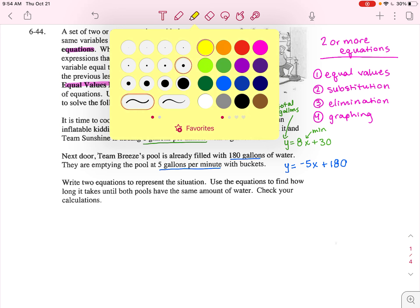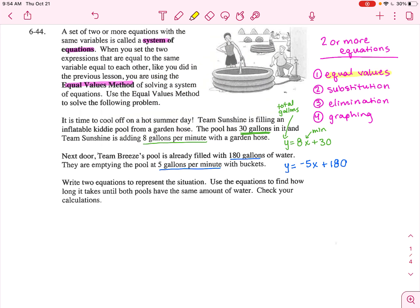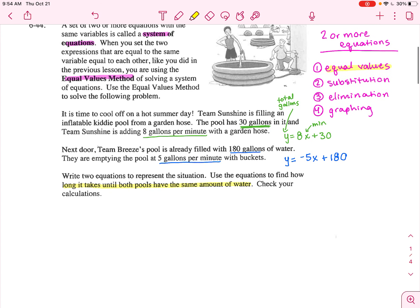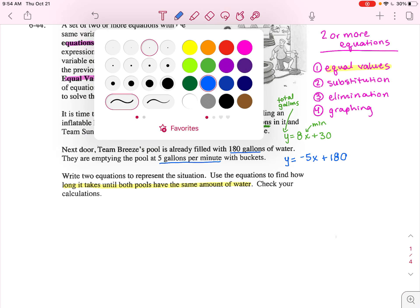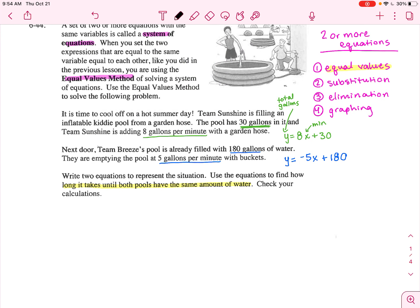Let's use this first method, equal values method, to solve for x because we want to know how long it takes until both pools have the same amount of water. And x in this equation, in these equations, represent minutes. So let's simply set these two equations equal to each other because it's in a nice form to do that because they're both in y equals form.